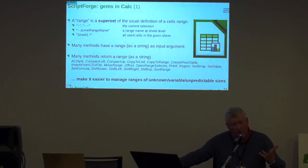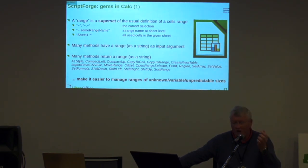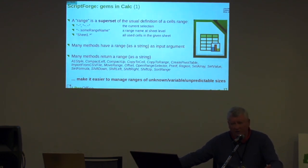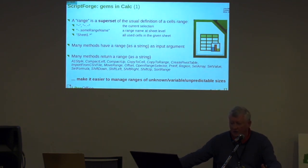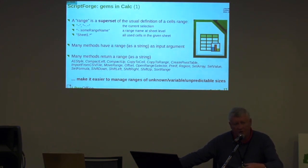Here are a number of nice features in Calc to illustrate the philosophy. A range in ScriptForge is a string — it's also a single range, but it's a string. The string is what you find in formulas classically in Calc, but extended with a number of placeholders that you can put in your range. You can put a tilde to say it's the current selection. You can put a star to say it's the last cell of the sheet, of the row, of the column. Many methods have a range as a string as input, and many methods return a range also effectively as a string.